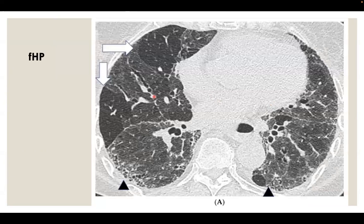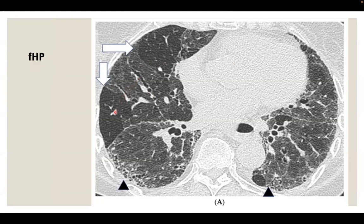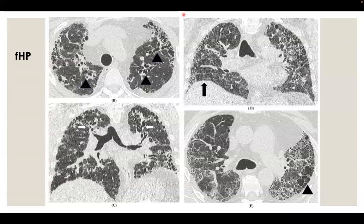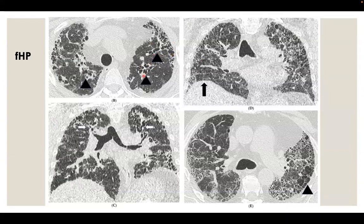What if we have a typical UIP pattern with features suggesting non-IPF, like fibrotic hypersensitivity pneumonitis? If we can find lobular air trapping within the upper lobes, this is a feature of fibrotic hypersensitivity pneumonitis. Air trapping is allowed to be seen in IPF UIP in the lower lobes only, not within the upper lobes. Another feature of distribution suggesting the typical UIP pattern is non-IPF is the presence of bronchocentric distribution of traction bronchiectasis, as appreciated here.